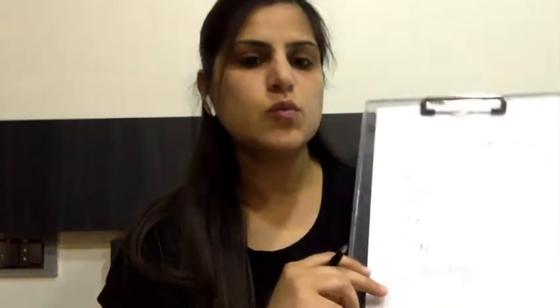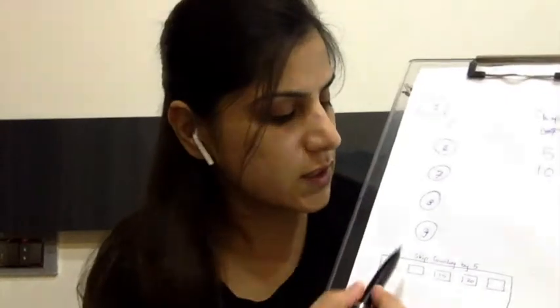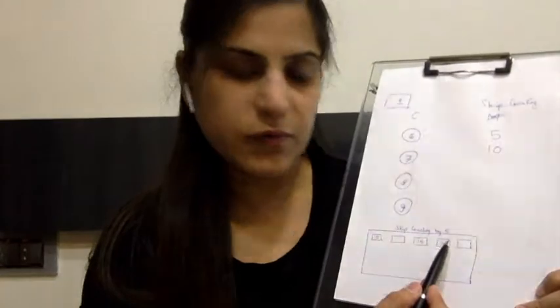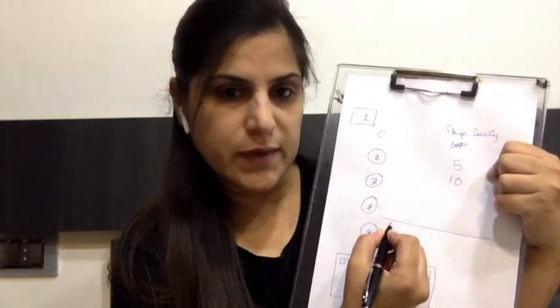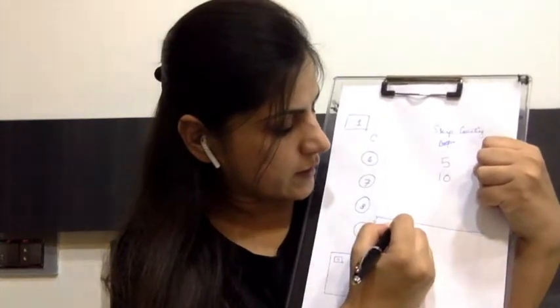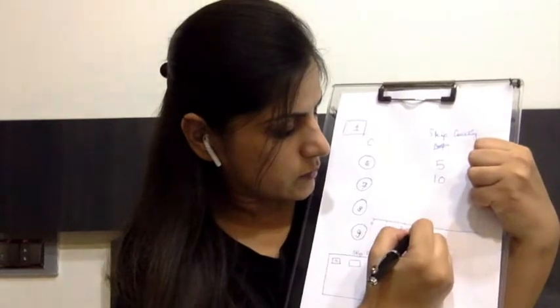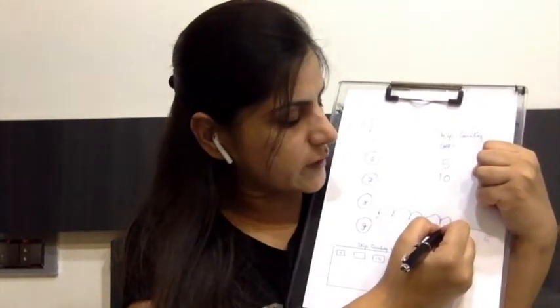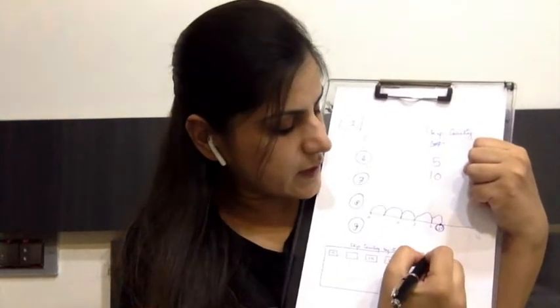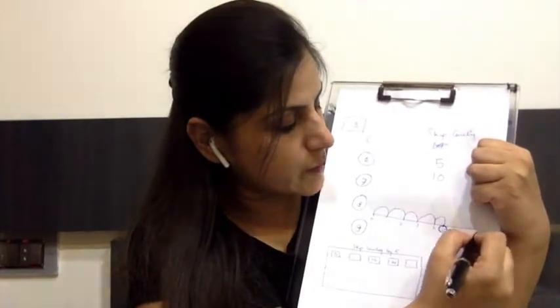Next, we can give the child some worksheets. Here I'm showing a sample of skip counting by five — you write a few numbers and leave a few blanks for the child to fill in. You can also trace a number line. On the number line, teach first and then give it as an exercise. For skip counting by five, mark numbers and tell the child to hop five times: one, two, three, four, five — on every fifth number, mark a circle and write that number below. Hop again — the next number is ten, mark a circle, and write below.